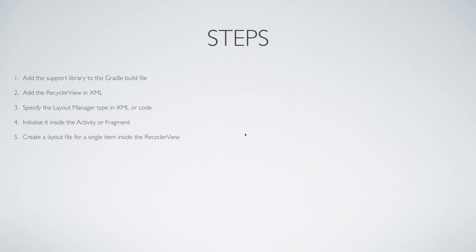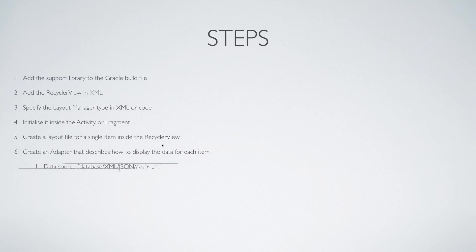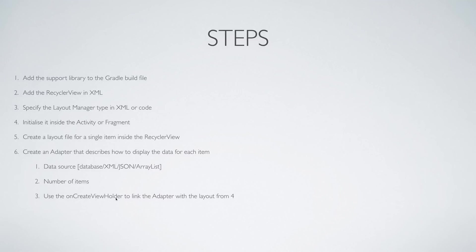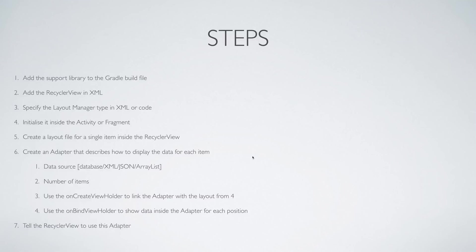Next, create a layout file that defines how a single item looks inside the RecyclerView — in Bucket Drops that means an ImageView and two TextViews. Then create the Adapter that describes how to display data for each item. Inside the adapter: specify where data comes from (in our case the Realm database), specify the number of items, use onCreateViewHolder to link the layout file with the adapter, and use onBindViewHolder to display the data at each position.